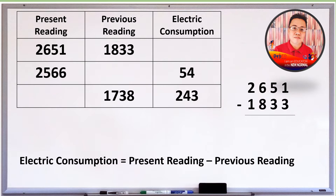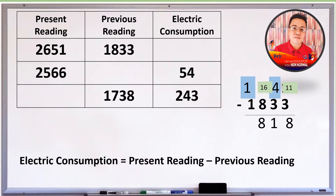At ang previous reading naman ay 1,833 kWh. Ipag-subtract natin ang dalawa. 1 minus 3 cannot be, borrow 1 from 5. 5 becomes 4 and 1 becomes 11. 11 minus 3 is 8. 4 minus 3 is equal to 1. 6 minus 8 cannot be, borrow 1 from 2. 2 becomes 1 and 6 becomes 16. 16 minus 8 is equal to 8. 1 minus 1 equals 0. So our electric consumption is 818 kWh.